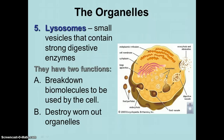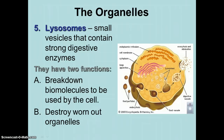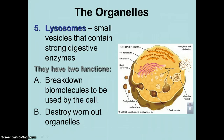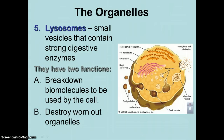Lysosomes are also like a self-destruct mechanism. If this lysosome was to break open, these digestive enzymes would begin to break down the cell. You've all witnessed this — have you ever seen a frog egg turn into a tadpole, which then turns into a frog? As that tadpole grows legs and its tail begins to shorten, the reason the tail disappears is that the cells making up the tail are being destroyed by lysosomes popping open inside them.